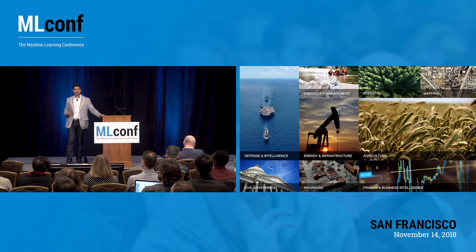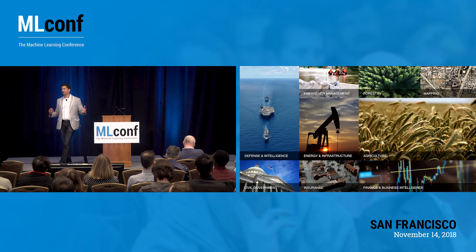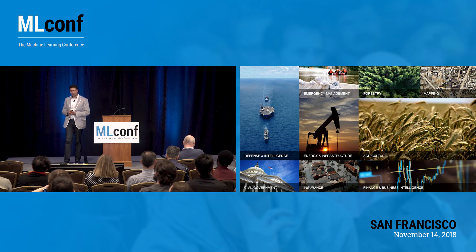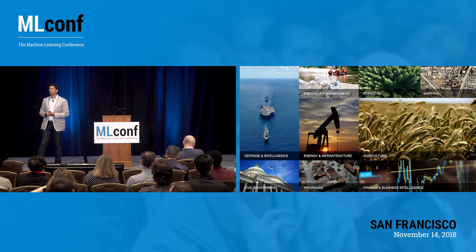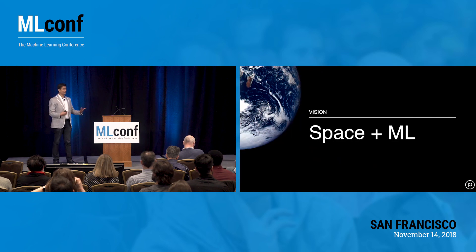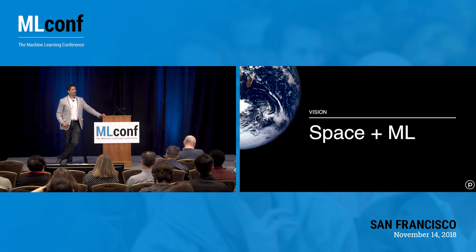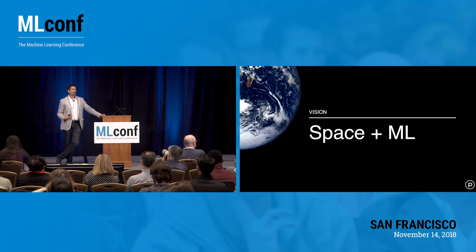We serve that imagery to a range of different verticals: defense and intelligence, precision agriculture, and finance and business intelligence. What I want to spend the rest of my time speaking about is our forward-looking vision — where Earth observation space meets machine learning and intelligent capabilities.